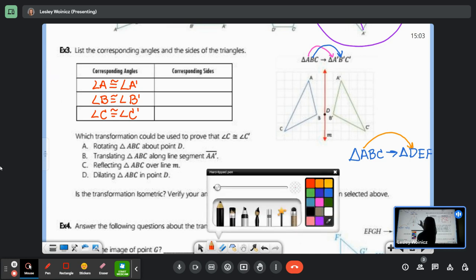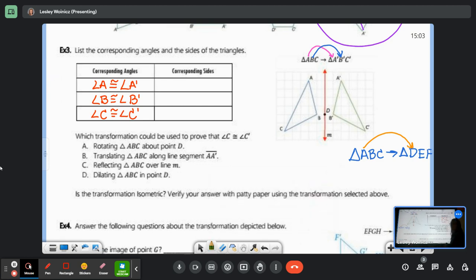Corresponding sides. The sides, do you see that they are segments? The corresponding sides are all going to be segments. Let's make sure that we get the order correct. Segment AB corresponds or is congruent to segment A prime B prime. Segment BC is congruent to segment B prime C prime. Segment CA is congruent to segment C prime A prime.